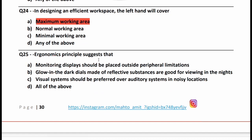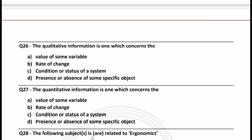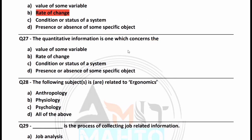Ergonomics principles suggest: monitoring displays should be placed within visual limitation; glow-in-the-dark or reflective dials are good for viewing at night; visual systems should be preferred over auditory systems in noisy locations. The right answer is option C. Qualitative information concerns the rate of change, condition, or status of a system — right answer is option B, rate of change. Quantitative information concerns the value of some variable — option A is correct.